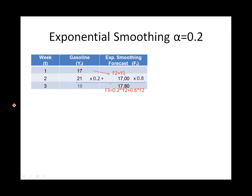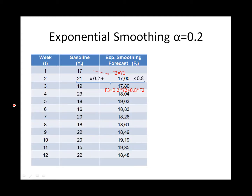Once we know the actual price of gasoline in week 3, we can calculate the forecast for week 4, which would again be 19 times 0.2 plus 0.8 times 17.8, and you get 18.04. You could calculate all the other values in the same way.